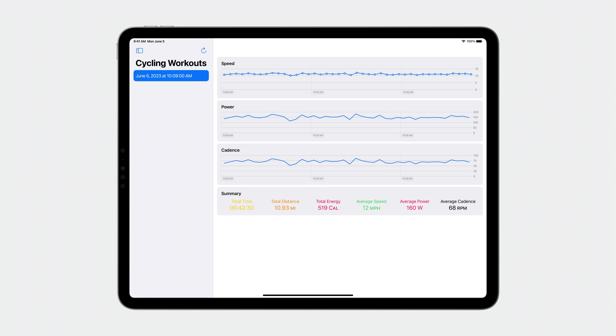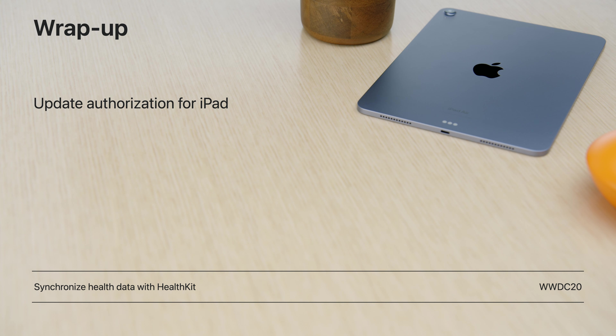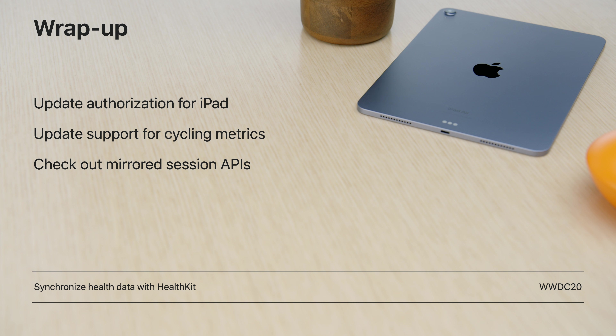Now, with the authorization taken care of, let's check out my workout on iPad. Now I can access my workout data and take advantage of the iPad's screen size to create a richer experience for my app. Now you can start and control a workout from your iPhone, collect and sync rich cycling data from your Apple Watch, and view the workout details on your iPad. Be sure to update your app to support authorization on iPad. If your fitness app involves cycling, you can add support for new data types. Check out the new mirrored session APIs to start mirroring data and controlling state between both devices. Use sync identifiers and version numbers to keep the data consistent across your server and users' devices. Give us your feedback — we want to support the features you need to keep building those amazing apps to keep the world healthy.